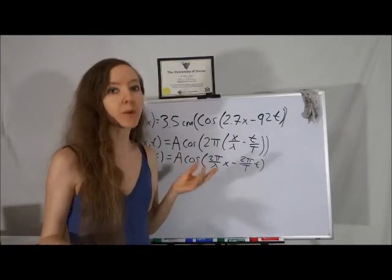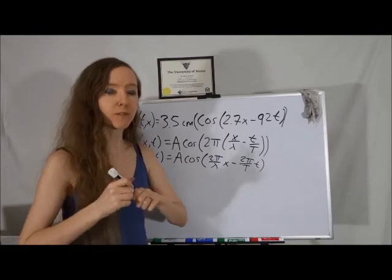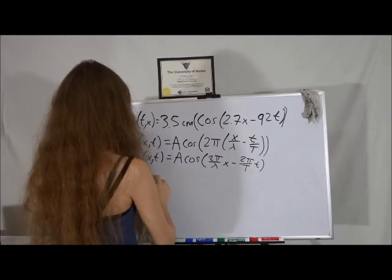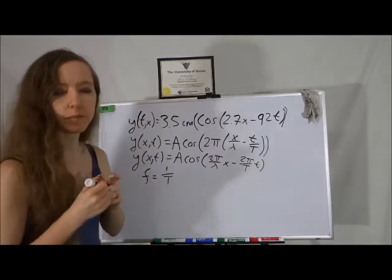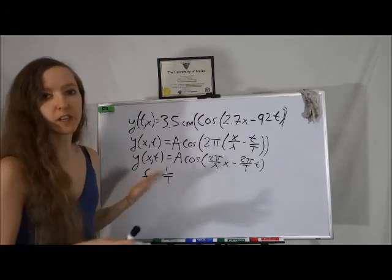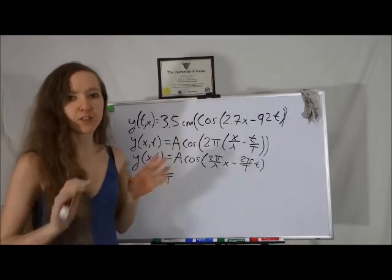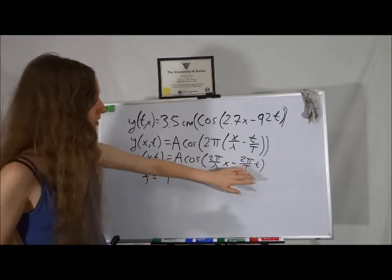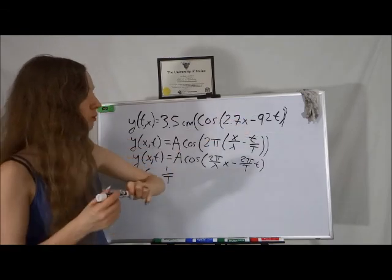To find our frequency, we have one extra intermediary step. Recall that frequency is 1 over the period. So if we look at stuff that involves period, we can use that information to solve for our frequency. We're going to play the same matching game we did before, except this time we're going to look at the coefficient in front of the time piece. So we have 2 pi over T is equal to 92.